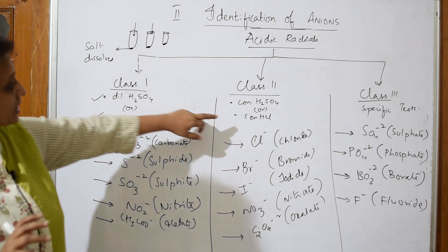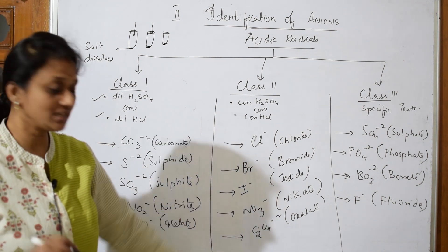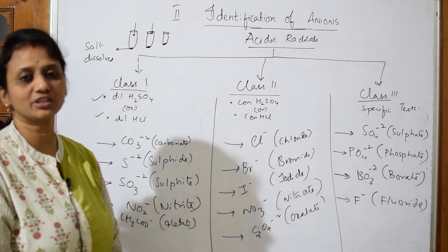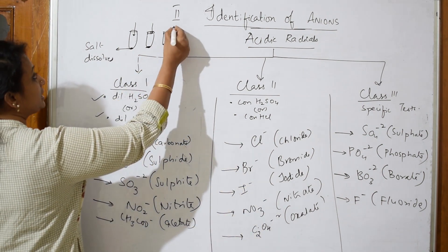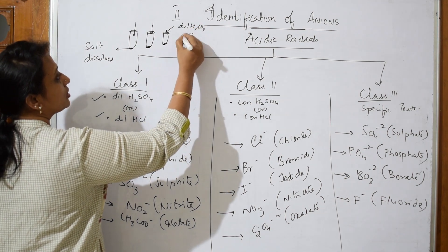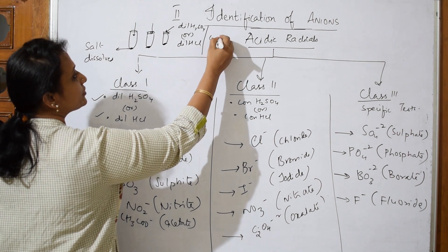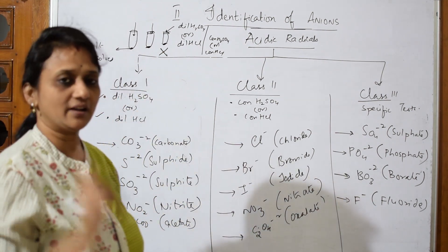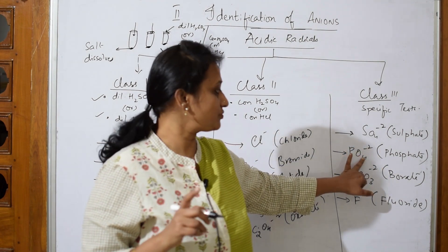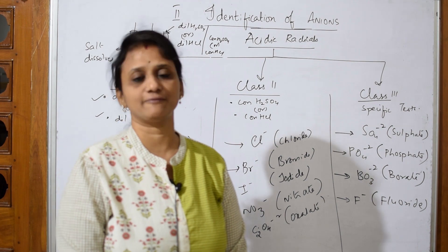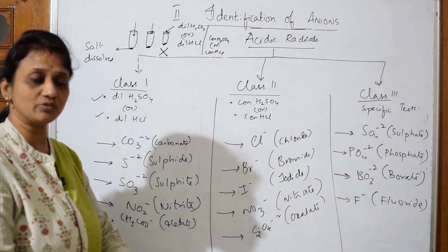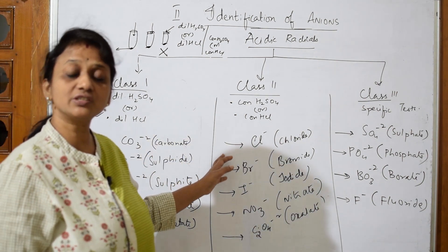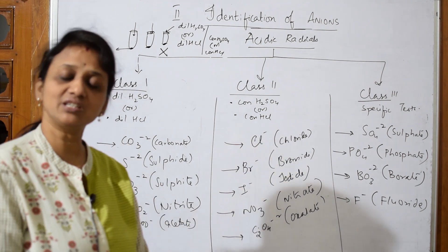In the second test tube, when you add concentrated sulfuric acid or concentrated HCl, if any Class 2 anions are present they will 100% dissolve, so you can identify those and go for the confirmatory test. In the third test tube, even if you add dilute or concentrated sulfuric acid or HCl the salt will not dissolve — then you are 100% sure the salt contains Class 3 anions: sulfate, phosphate, borate, or fluoride. So remember: anions responding to dilute acid are Class 1, concentrated acid are Class 2, and specific tests are Class 3.